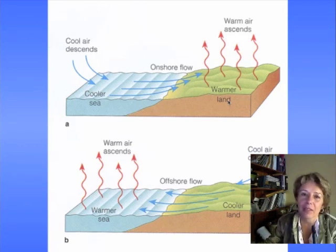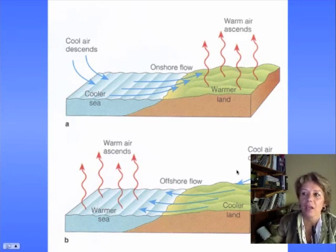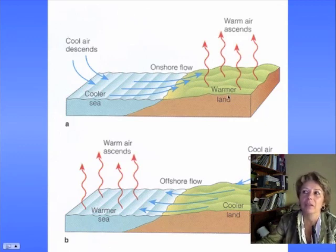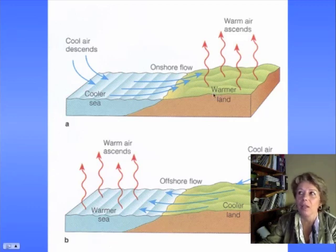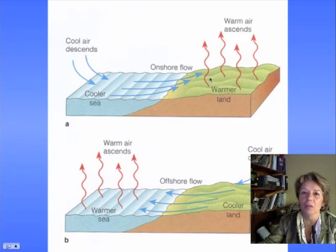We talked about why we have air that blows from the sea toward the land in the day and from the land toward the sea at night. That's because water has high heat capacity. In the daytime the sun comes out, the land heats up fast but the ocean stays the same temperature. The air above the land rises and the cool wind comes in to take its place — that's why when you're standing on the beach in the daytime, the breeze is hitting you in the face.